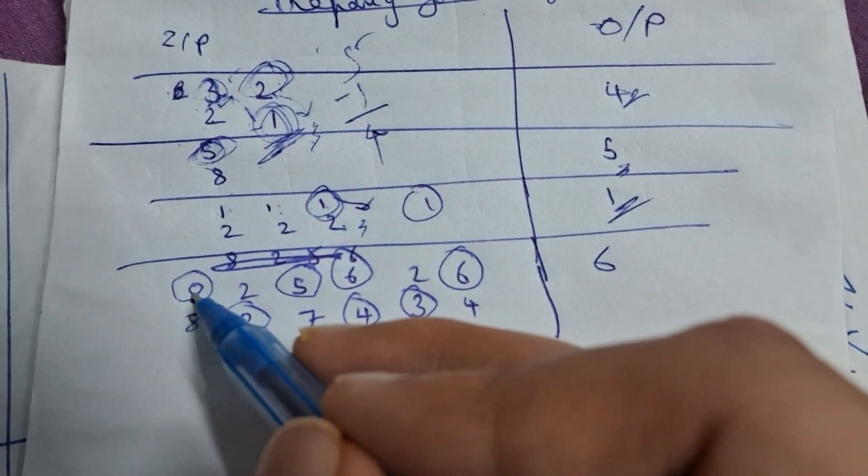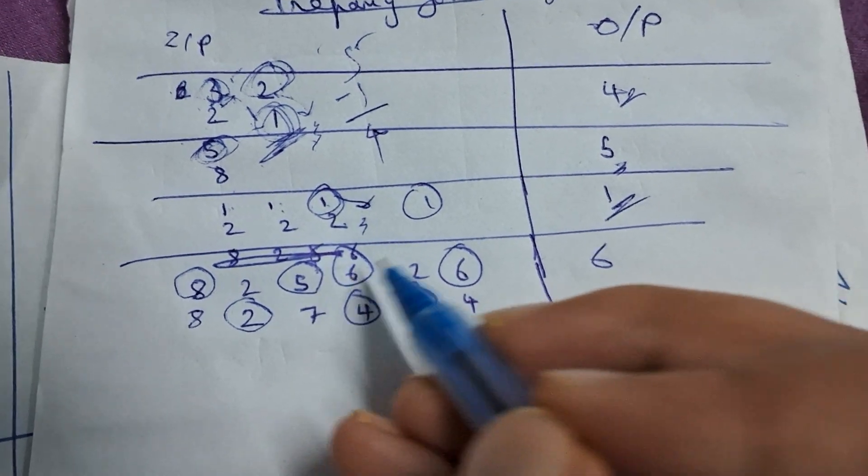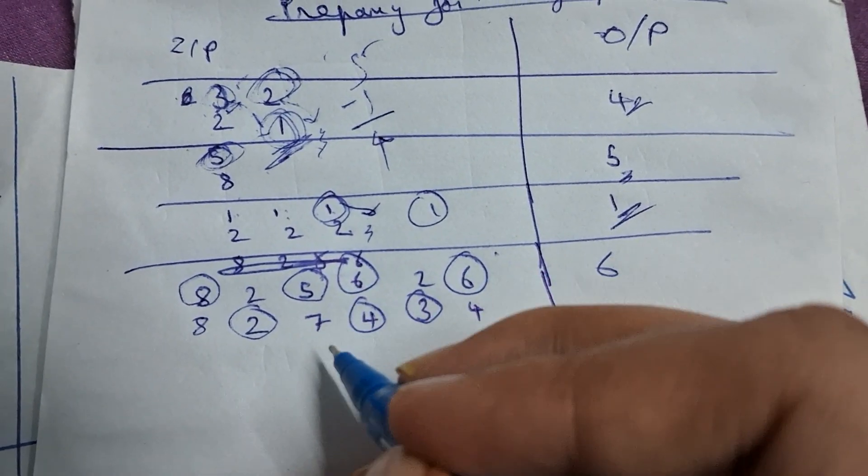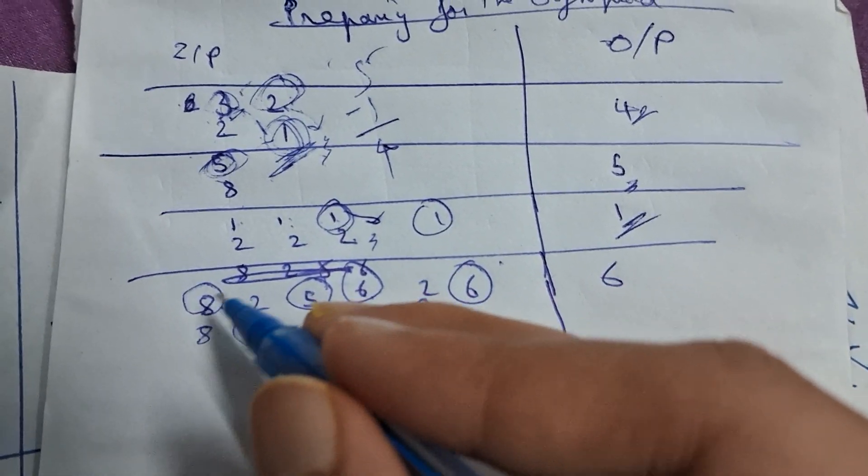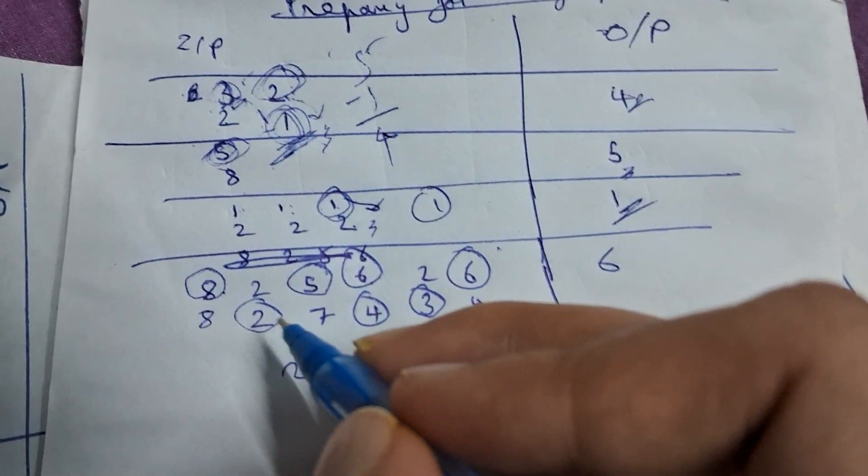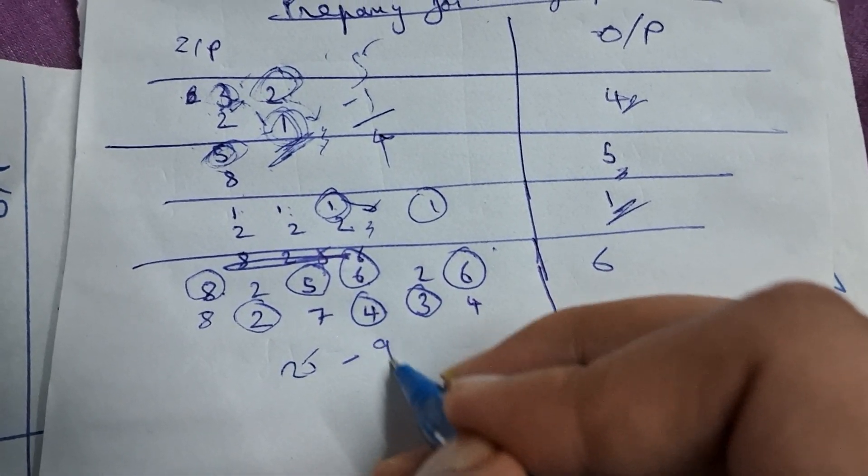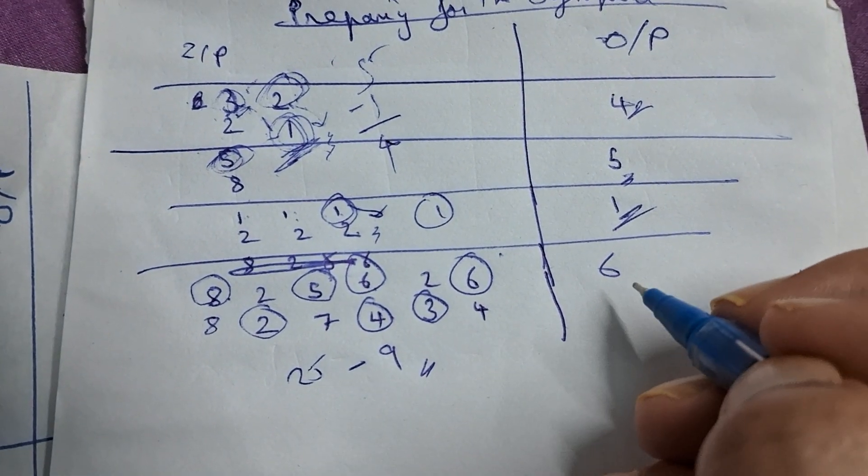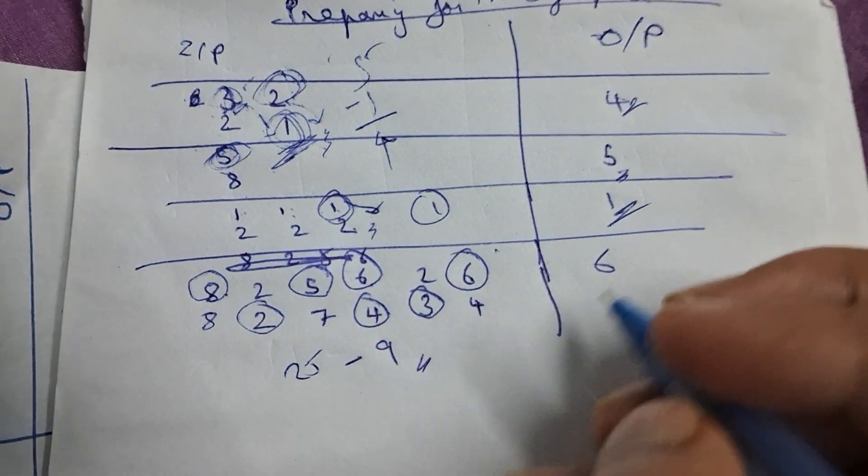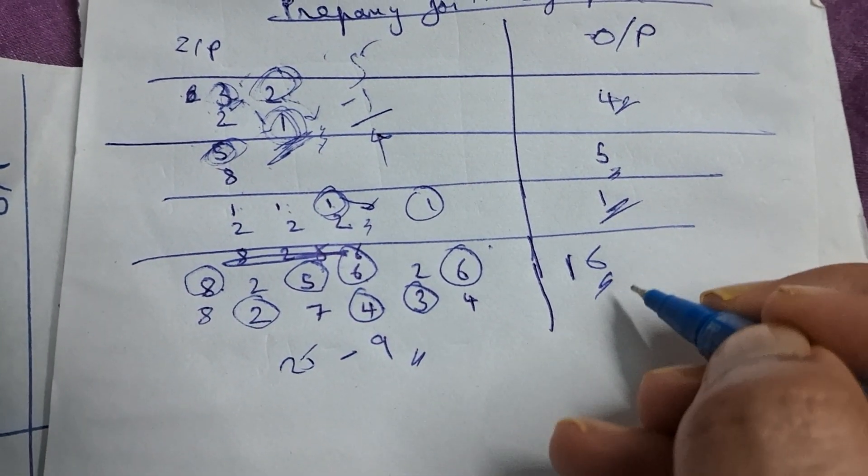So if I add it out 8, 5, 6, 6, that becomes 6 plus 6 is 12 and 12 plus 8 is 20, 25. 25 minus 4, 5, 6, 7, 8, 9. So 25 minus 9, it is 16. So this was not 6, this was 16 only. So that's 16.